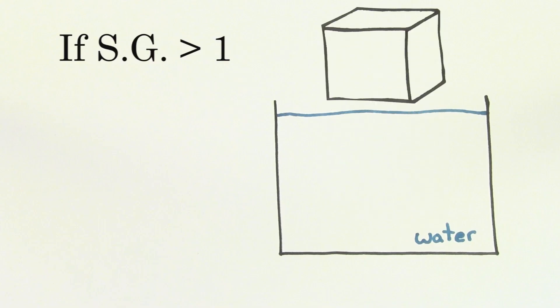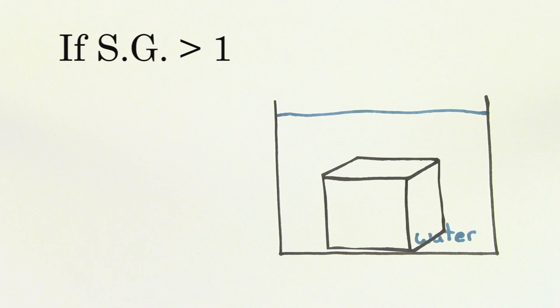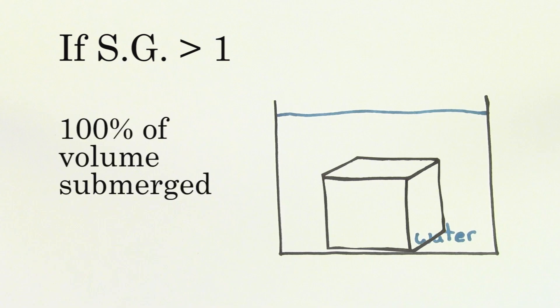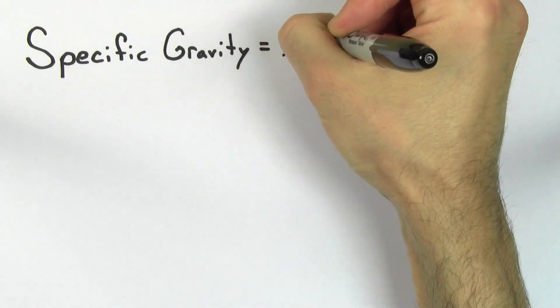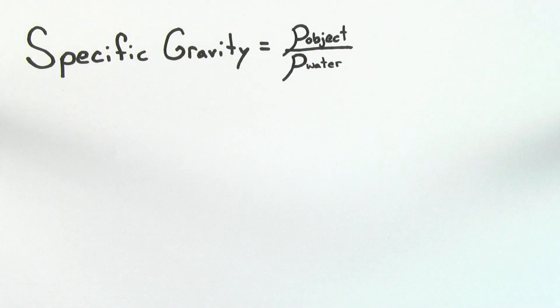So, if the specific gravity of an object is greater than 1, that object is going to sink if placed freely in water, and it'll have exactly 100% of its volume submerged. Usually, when people are referring to the specific gravity, they're referring to the density of the object divided by the density of water. But sometimes it's useful to define the specific gravity with respect to a liquid that's different from water.